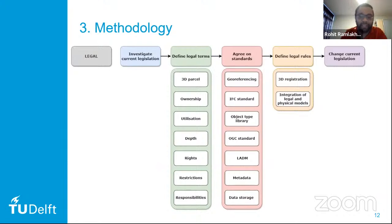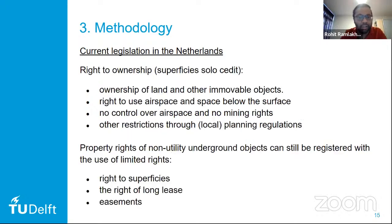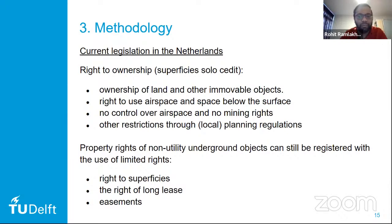The first step in the legal part is to investigate the current legislation. When you look at the current legislation in the Netherlands, you can see there are three types of cadastral objects: parcels, apartments, and utility networks. Other non-utility network underground objects are not separate cadastral objects. When you own land in the Netherlands, you also own every immovable object on that land and have the right to use the airspace and the space below the surface, but you do not have control over the airspace and you do not have mining rights. There may also be other restrictions through local planning regulations.